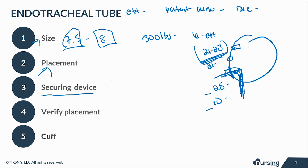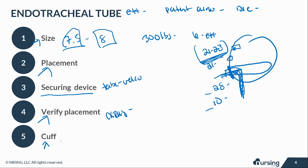Check your securing device — it can be tape, Velcro, or a commercial ET tube holder that wraps around the back of the patient's head to keep the ET tube in place. Verify placement with a chest X-ray, listening to breath sounds, or an end-tidal CO2 monitor. Check that the cuff is inflated; some ventilators can do this automatically, otherwise you would perform a leak test. The most important thing is you don't want to hear a leak and you want to make sure that cuff is inflated.